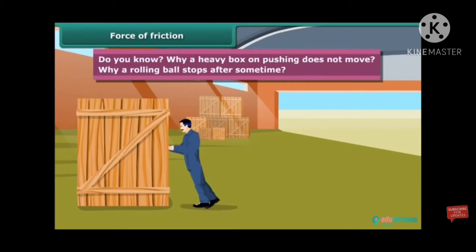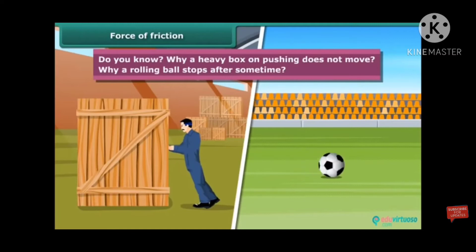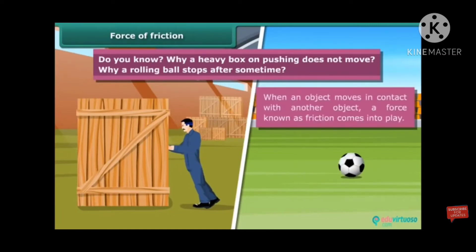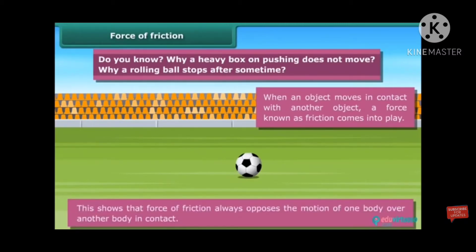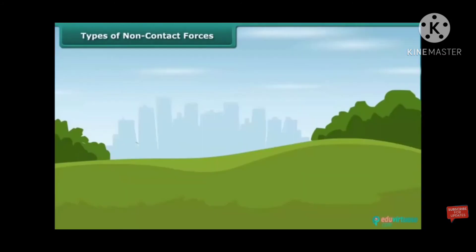Next, do you know why the heavy box on pushing does not move while a rolling ball stops after some time? Yes, that is because when an object moves in contact with another object, the force known as friction comes into play. Here, the frictional force is acting on a ball due to it rolling on the ground. The friction which is offered by the ground is exerted on the ball, so it slows down and at last it stops. This shows that the force of friction always opposes the motion of an object.